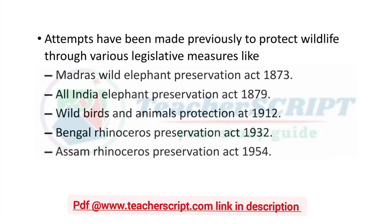These previous acts include: Madras Wild Elephant Preservation Act 1873, All India Elephant Preservation Act 1879, Wild Birds and Animals Protection Act 1912, Bengal Rhinoceros Preservation Act 1932, and Assam Rhinoceros Preservation Act 1954.